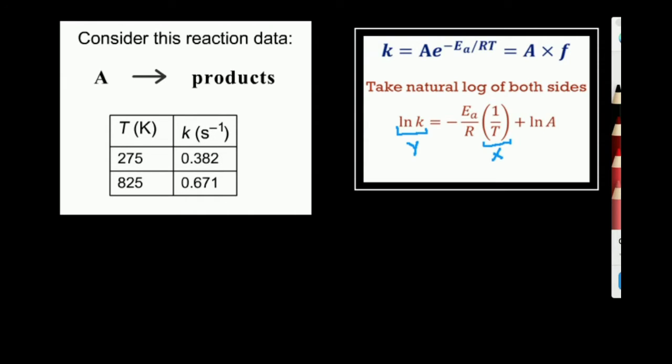What I can also say is that this quantity negative activation energy over the ideal gas constant could be my slope and then natural log of the Arrhenius factor will be b, my y-intercept.